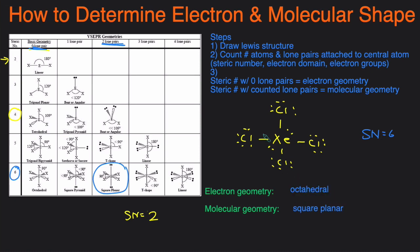That's how you determine the electron and molecular geometry or shape. We start by drawing the Lewis structure — check out my Lewis structure video if you need help. Then we determine the steric number or electron domains by counting the atoms and lone pairs attached to the designated atom. For electron geometry, match the steric number with zero lone pairs. For molecular geometry, match the steric number with the actual number of lone pairs — so in this case, steric number 6 and two lone pairs gives us square planar.